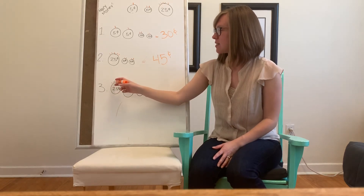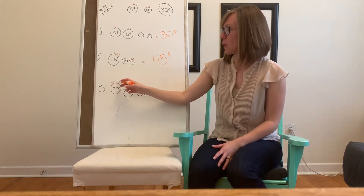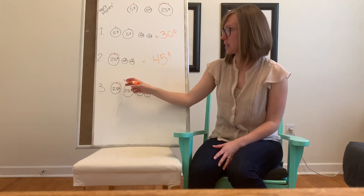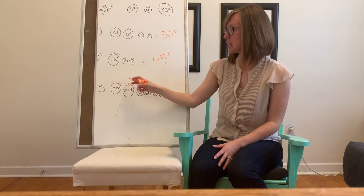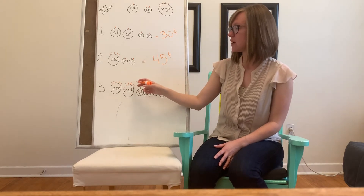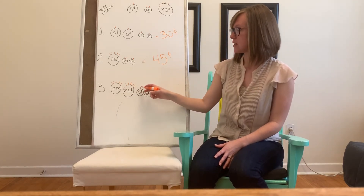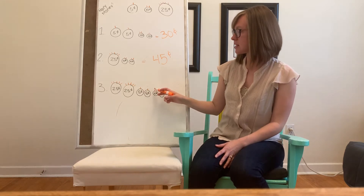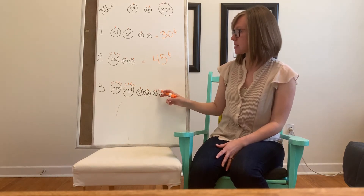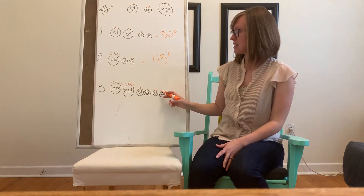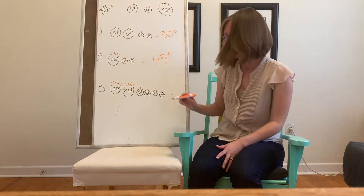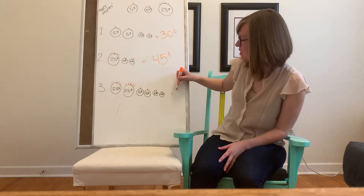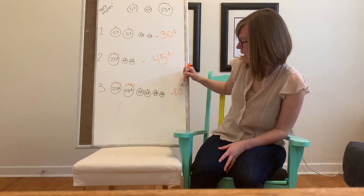Let's do it together: five, ten, fifteen, twenty, twenty-five, thirty, thirty-five, forty, forty-five, fifty, fifty-five, sixty, sixty-five, seventy, seventy-five, eighty. All of these coins add up to eighty cents.